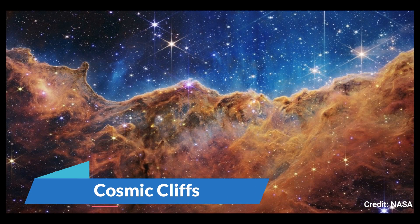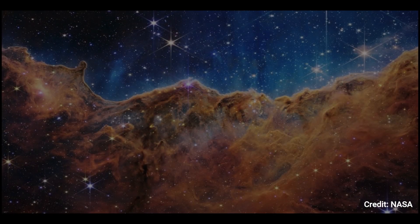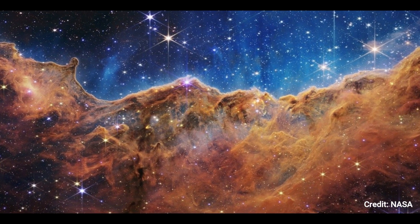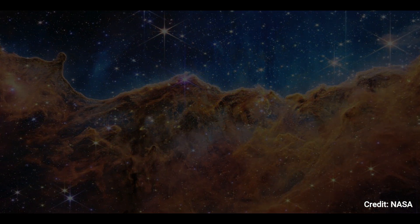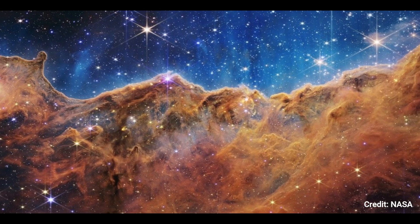Number 7. Cosmic Cliffs. On a moonlit evening, what appears to be Rocky Mountains is actually the border of the Carina Nebula's adjacent, young, star-forming area, NGC 3324.